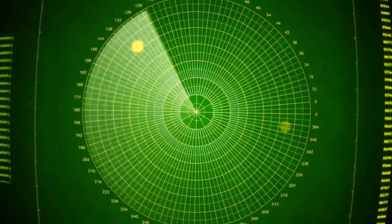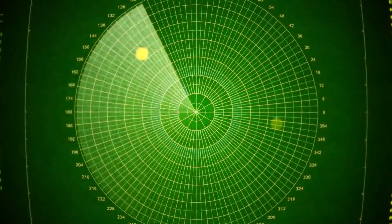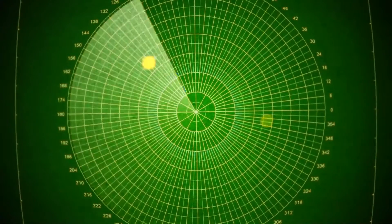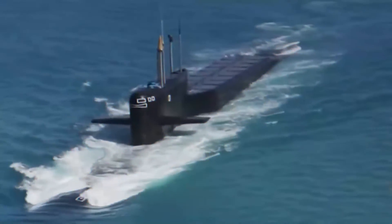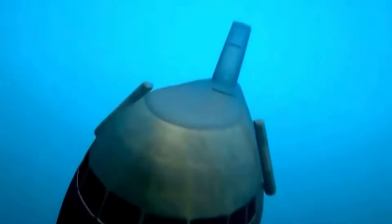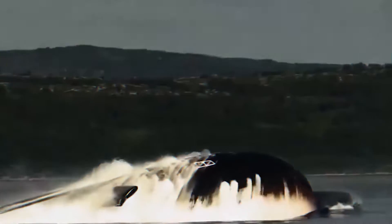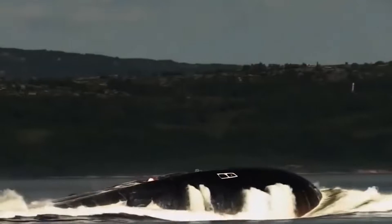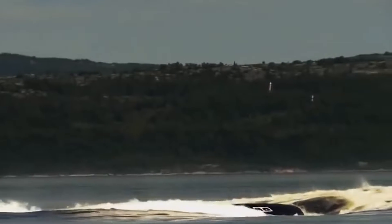The advantage of the active method is the ability to directly determine not only the bearing, but also the distance to the target. The disadvantages are the inability to classify targets, a shorter detection range than in the passive method, the disclosure of one's own location, as well as the inability of stealth detection. The enemy submarine will hear the emitted signal at a distance of about twice as far, at which the active search acoustics will hear the reflected echo.